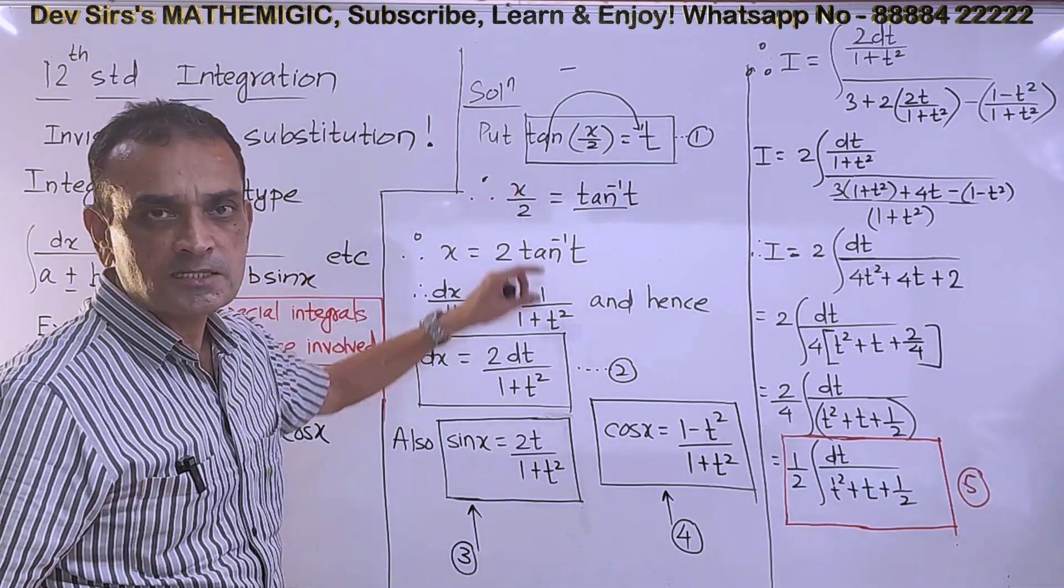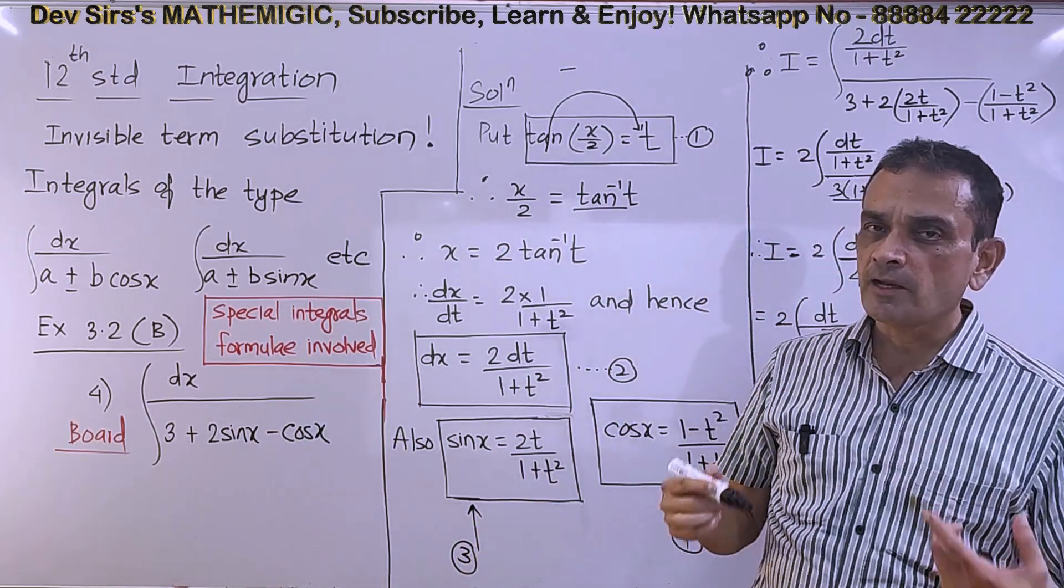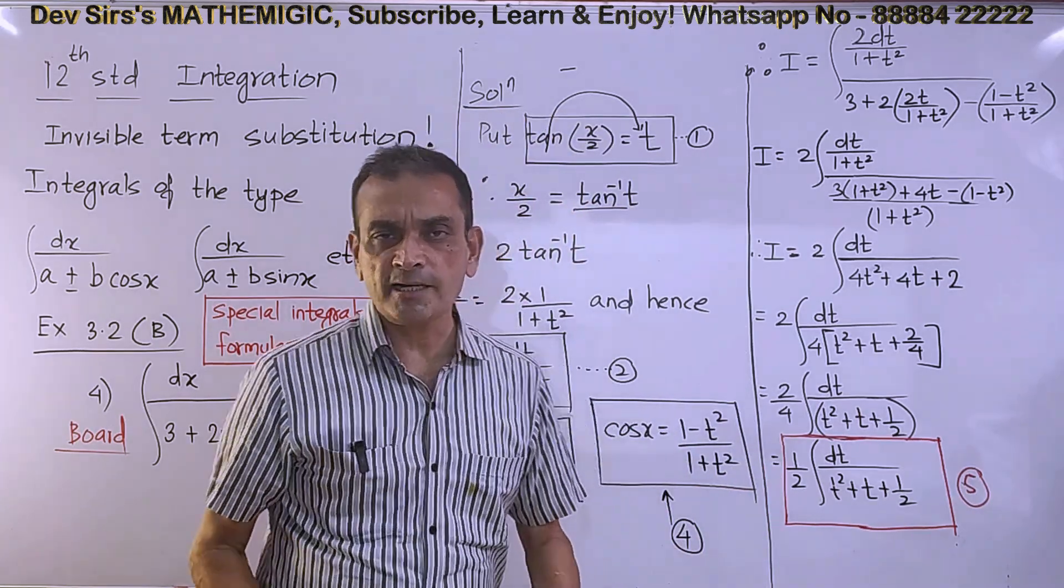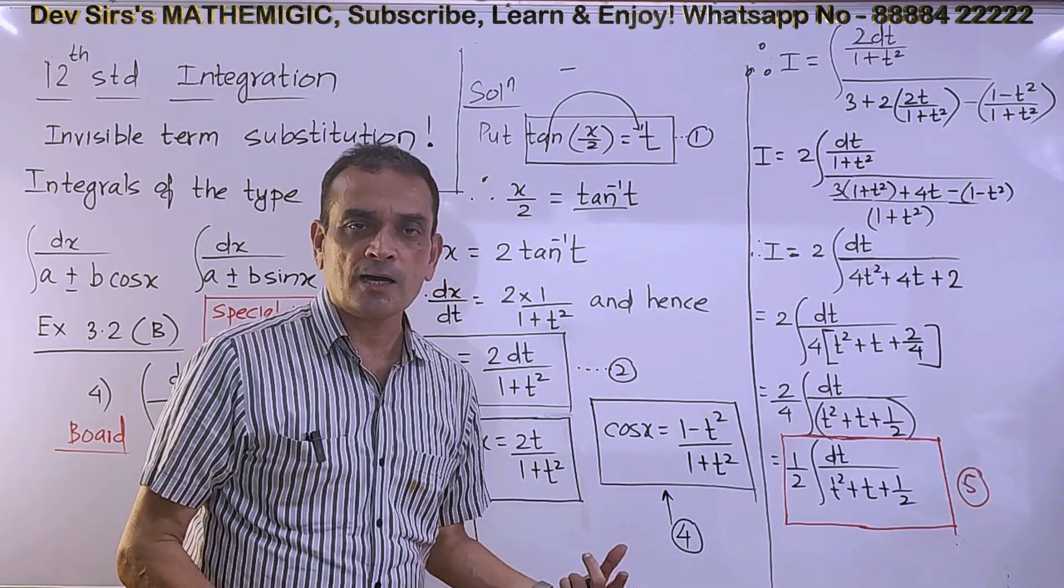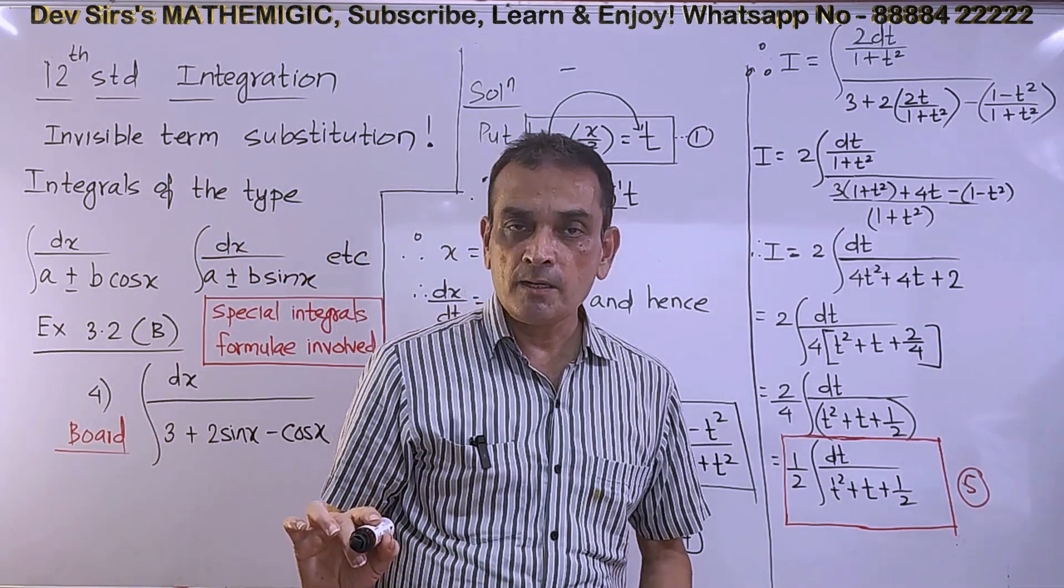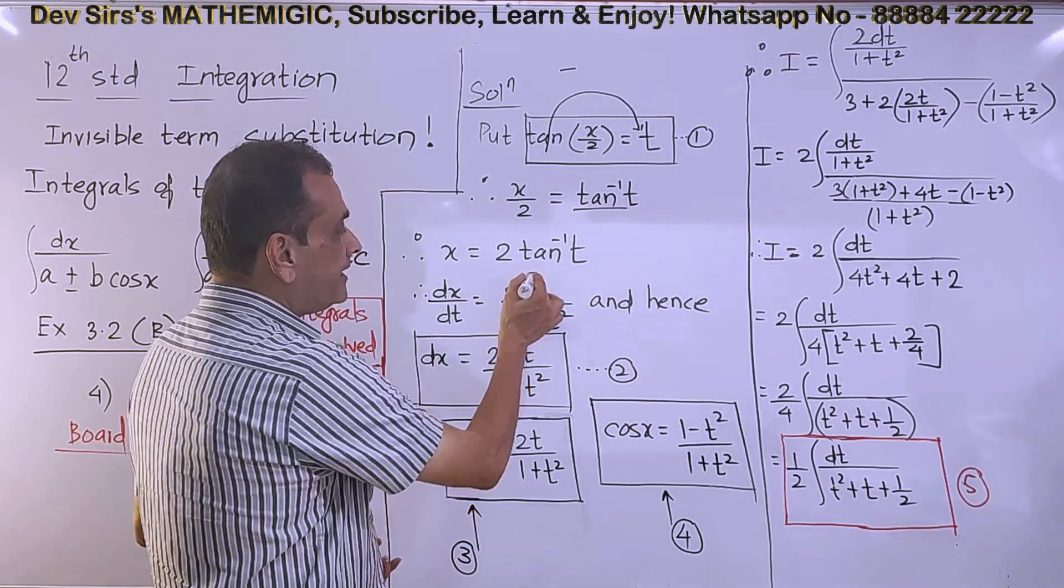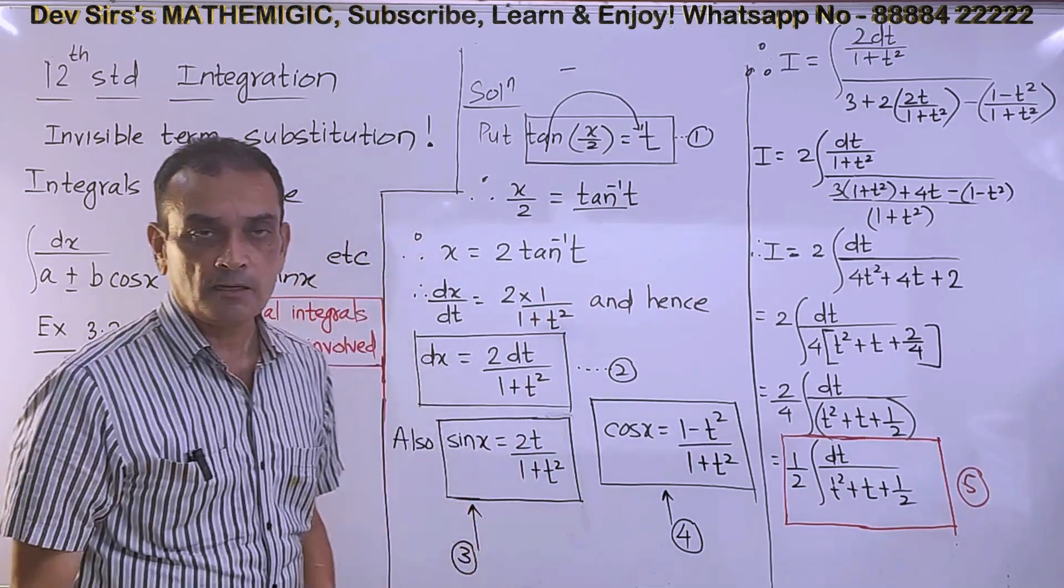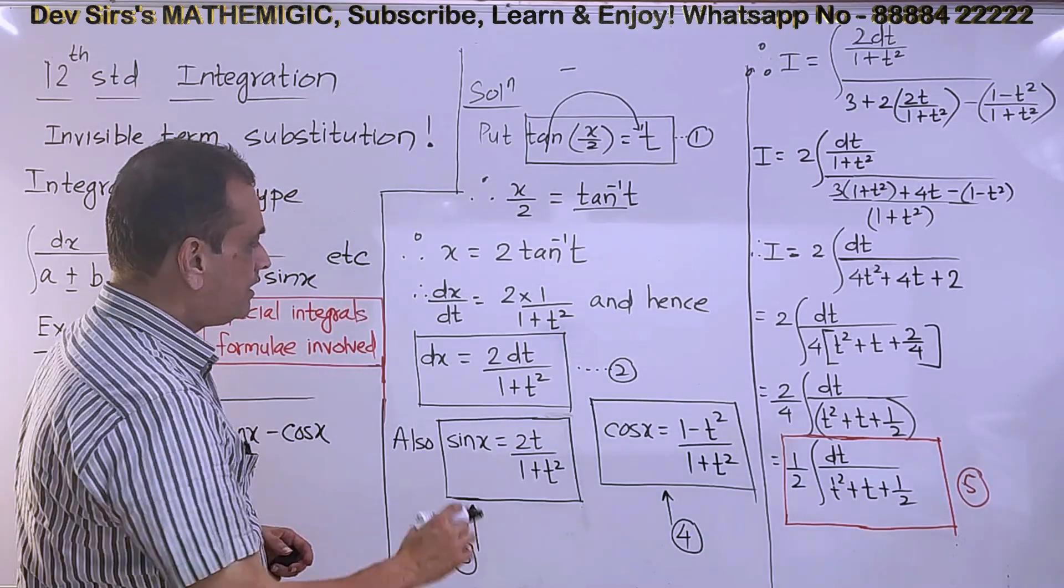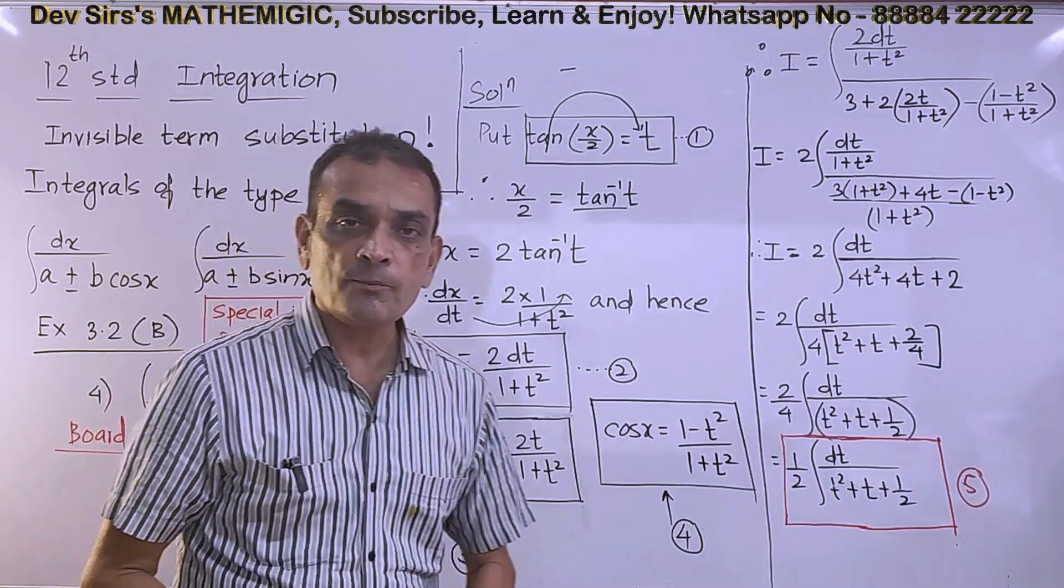After you put this substitution, x/2 equals tan inverse t. Tan goes on the other side as tan inverse, basic principle. Cross multiply: x equals 2 tan inverse t. After making a substitution, we are required to differentiate. Differentiate with respect to t. So derivative dx/dt equals 2 times derivative of tan inverse t, which is 1/(1+t²). After simplification, dx equals 2dt/(1+t²).